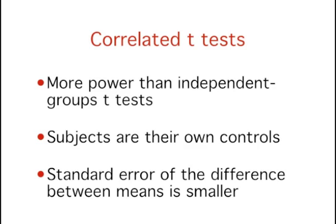We just showed how the correlated t-test returned a larger t-value than the independent group's t-test did. This is a typical result. Correlated t-tests almost always have greater power than independent group's t-tests.